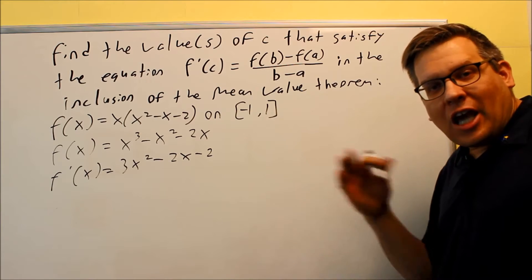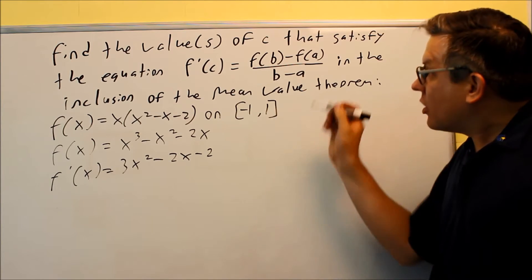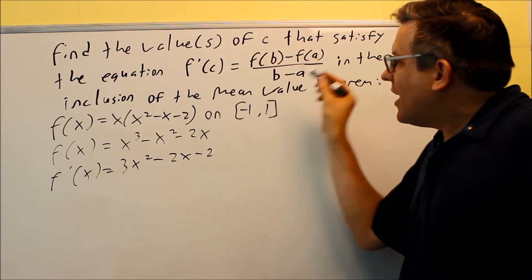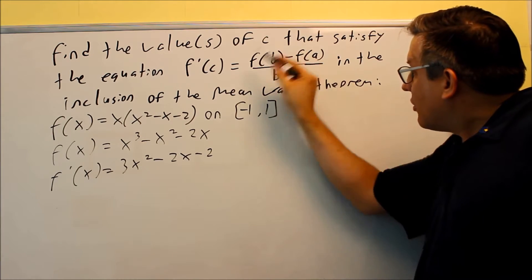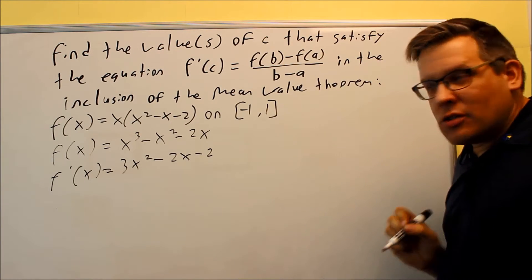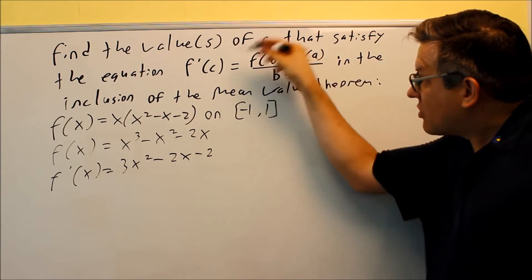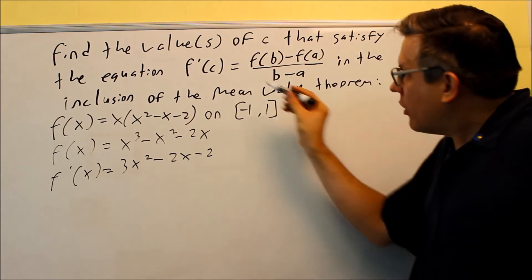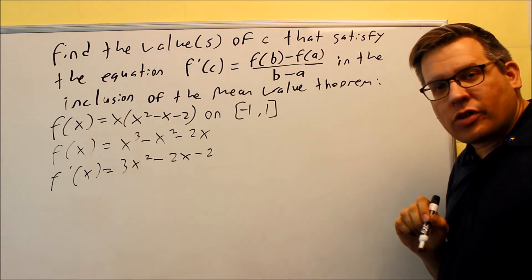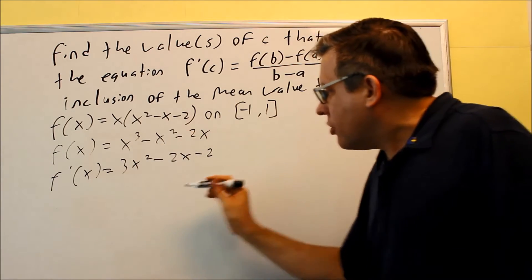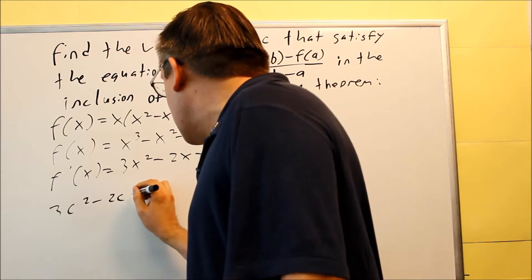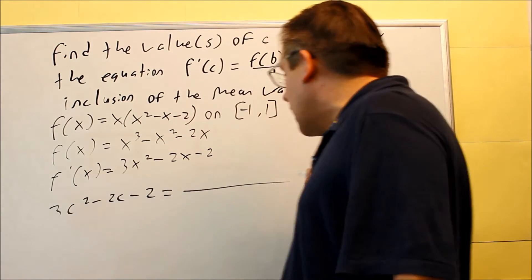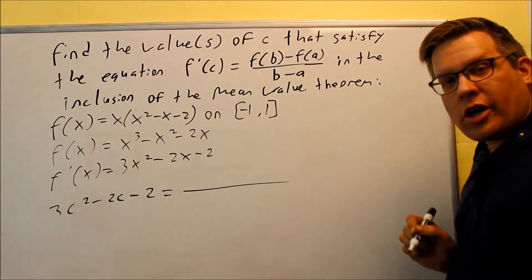So if the mean value theorem can be applied, then we know for sure we're guaranteed to find a C on our interval here that would satisfy this particular equation. So the thing we're going to do now is actually solve for this. So I want to first start with the left-hand side. That's the derivative with the C put in there. So what I'm going to do is just take this one I just did and put a C in there for that one, and then I'm going to set it equal to the right-hand side.